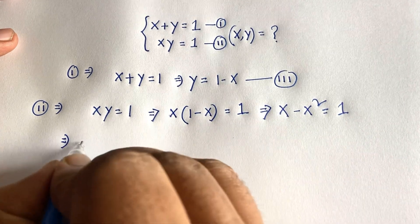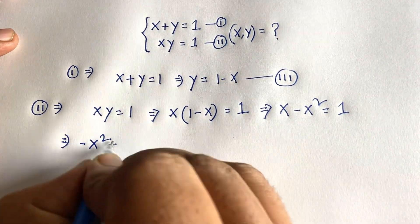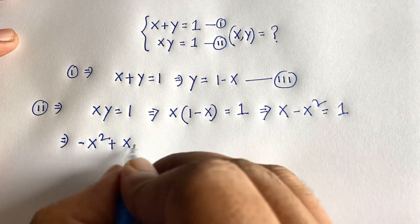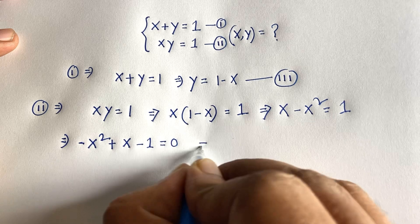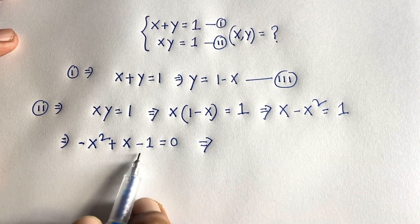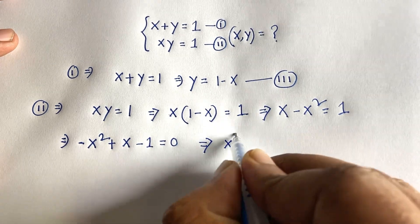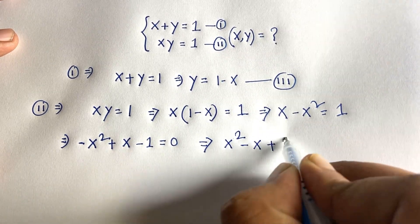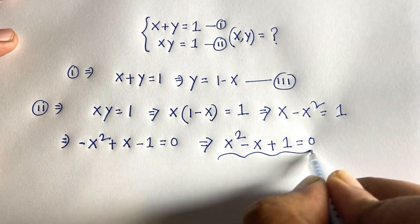We have minus x squared plus x equals 1. Moving the 1 to the left side gives minus x squared plus x minus 1 equals 0. Multiplying both sides by minus 1, we get x squared minus x plus 1 equals 0. This is a quadratic equation.